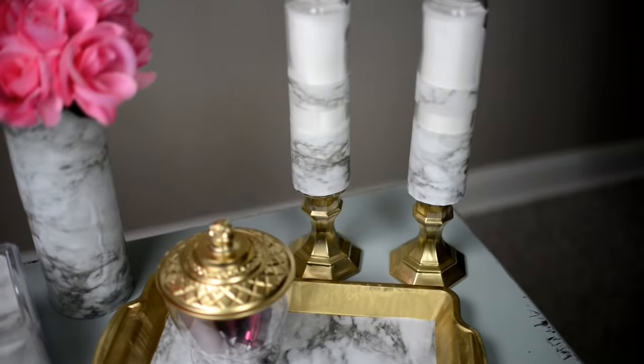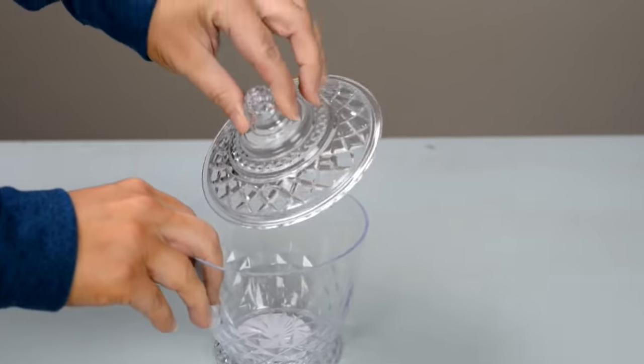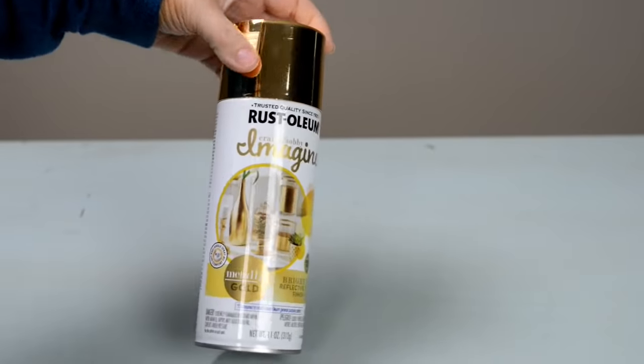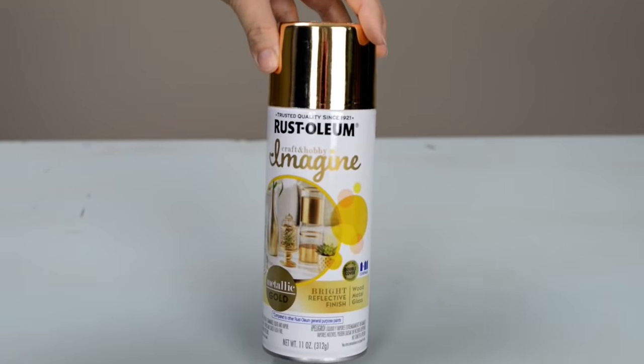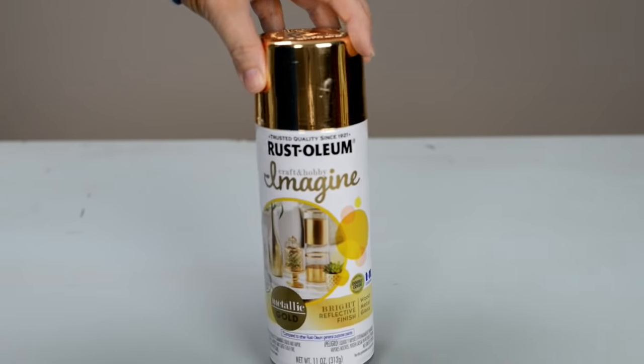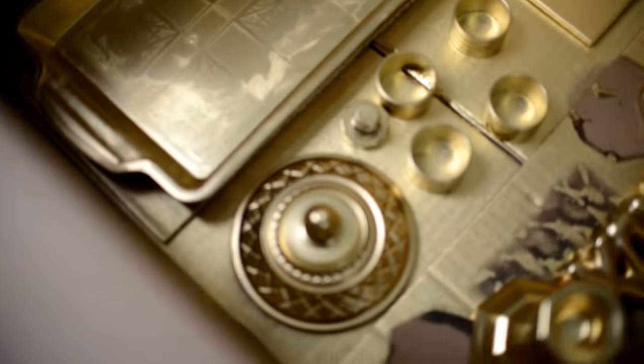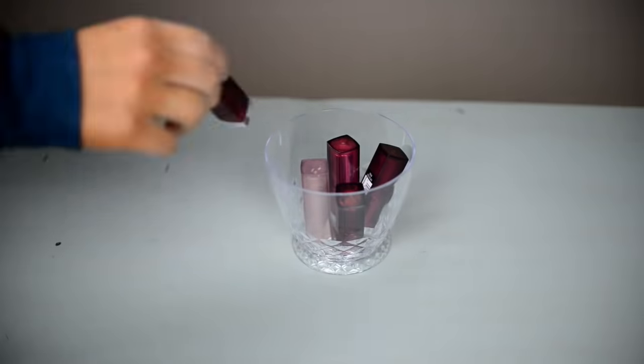Next, we're going to make this cute little container. This was super simple. This was in the party section and I'm going to spray paint with Rust-Oleum Mirror Metallic Gold from Walmart in the craft section. I'm going to spray paint the lid and store my lipsticks in it. That's all you need to do to make that piece.